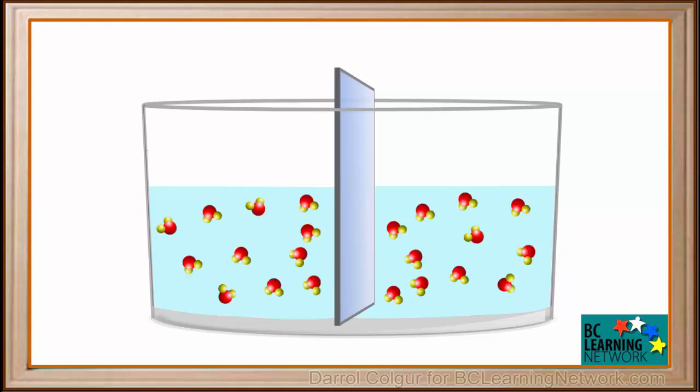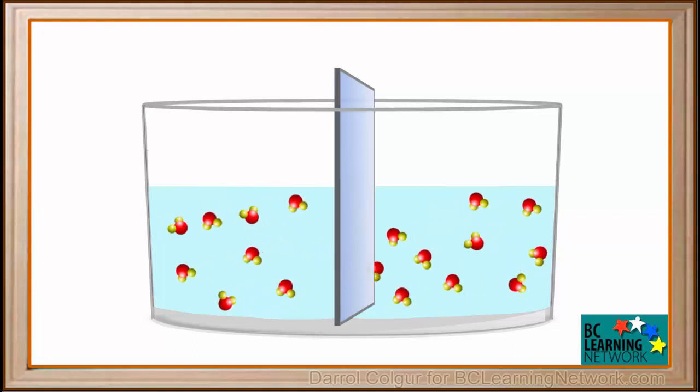We'll add some water to both sides of the barrier. We'll represent a few water molecules and show that they are moving randomly. You can see they go through the barrier from left to right and from right to left, but for each one that goes right, another one goes left. So an equilibrium is maintained.